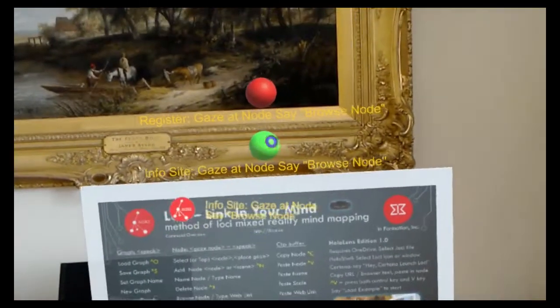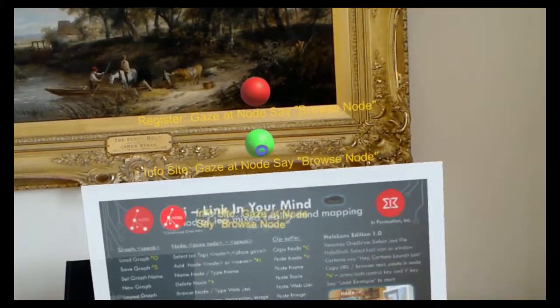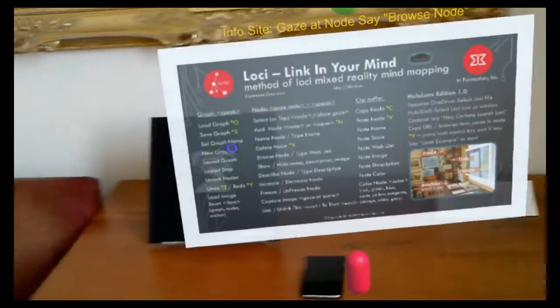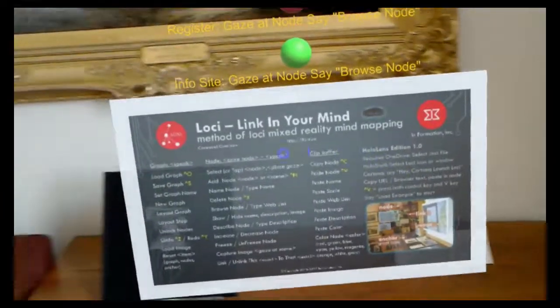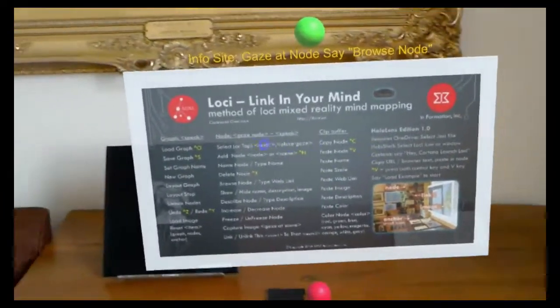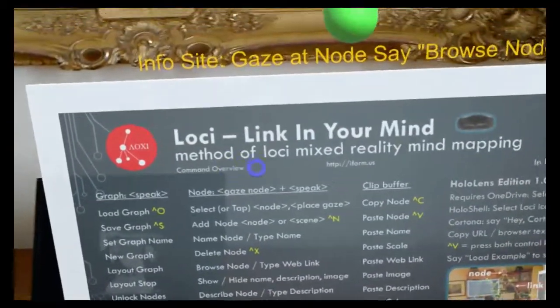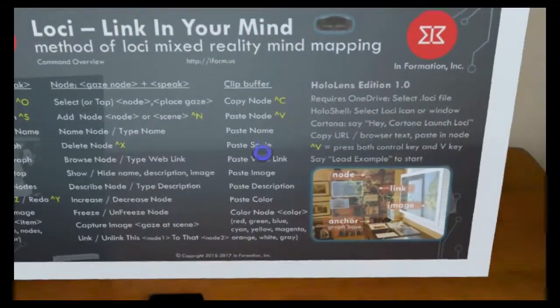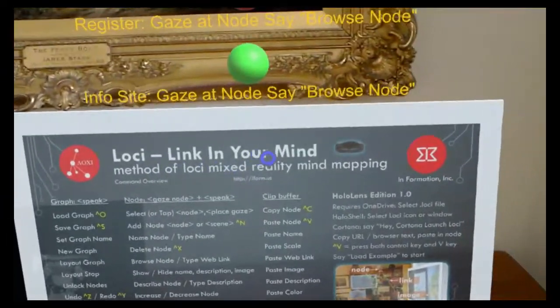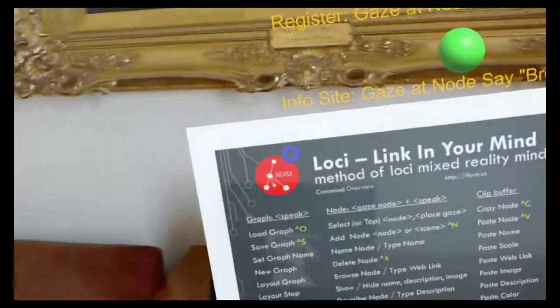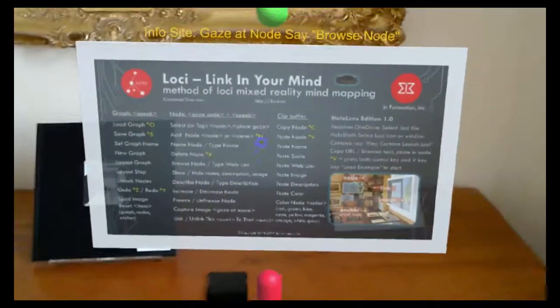And underneath the green node is actually an opened image for the node, which has the voice commands and gaze commands combined for working with the method of Loci mixed reality mind mapping that we put together here.